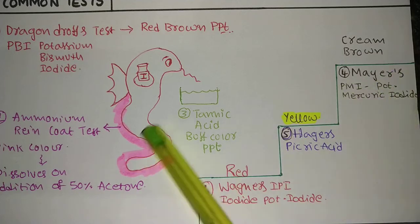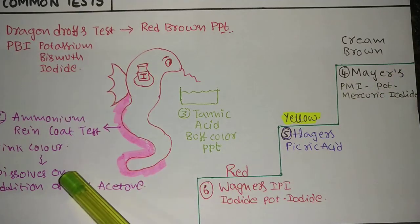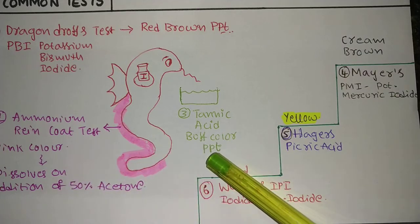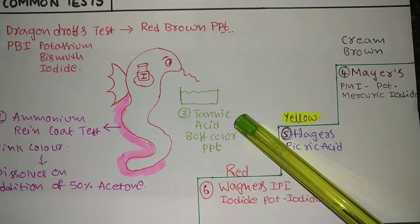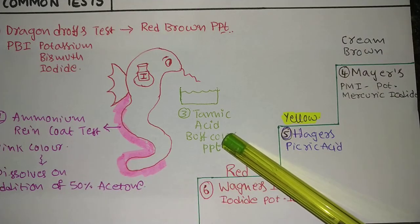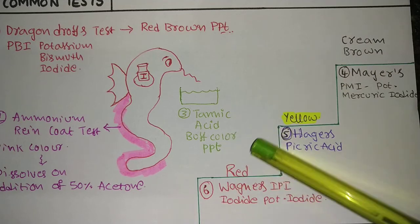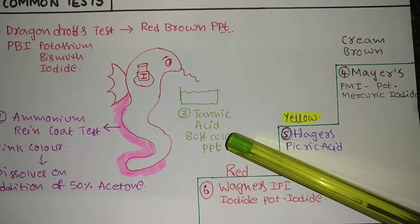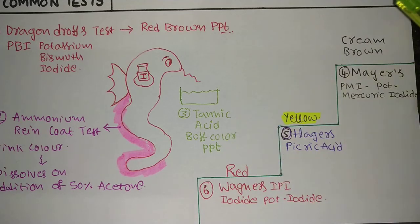To recap: Wagner's reagent is iodide potassium iodide; Hager's reagent is picric acid; Mayer's reagent is PMI — potassium mercury iodide; Dragendorff's is potassium bismuth iodide; Reineckate gives pink color; and tannic acid gives a buff color precipitate. Repeat the video, take a screenshot, and subscribe to my channel. Thank you for watching.